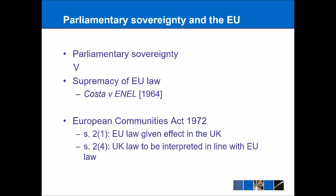EU law is contrasted with parliamentary sovereignty because the case of Costa v ENEL from 1964 established the EU as a new and unique legal order which should be seen as supreme over national law. This seems to contradict the idea of parliamentary sovereignty, and the answer came through the European Communities Act 1972, in particular sections 2.1 and 2.4. Section 2.1 means that EU law is given effect in the UK, and section 2.4 says that UK law is to be interpreted in line with EU law. So EU law is supreme in the UK, but only because an Act of Parliament says it is.